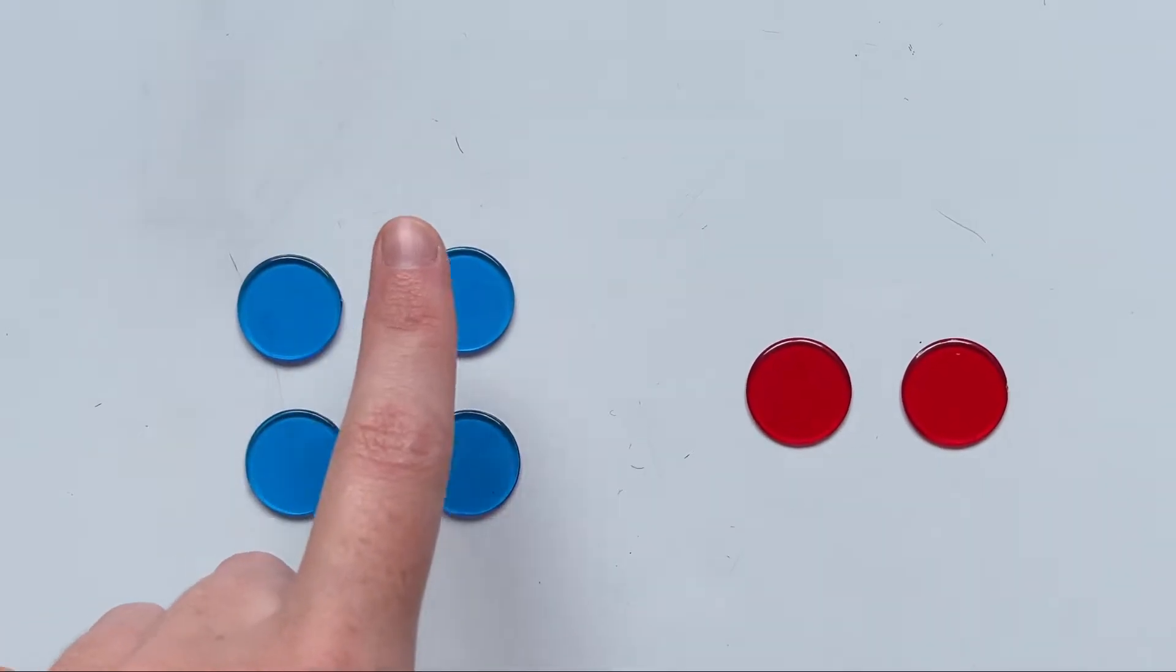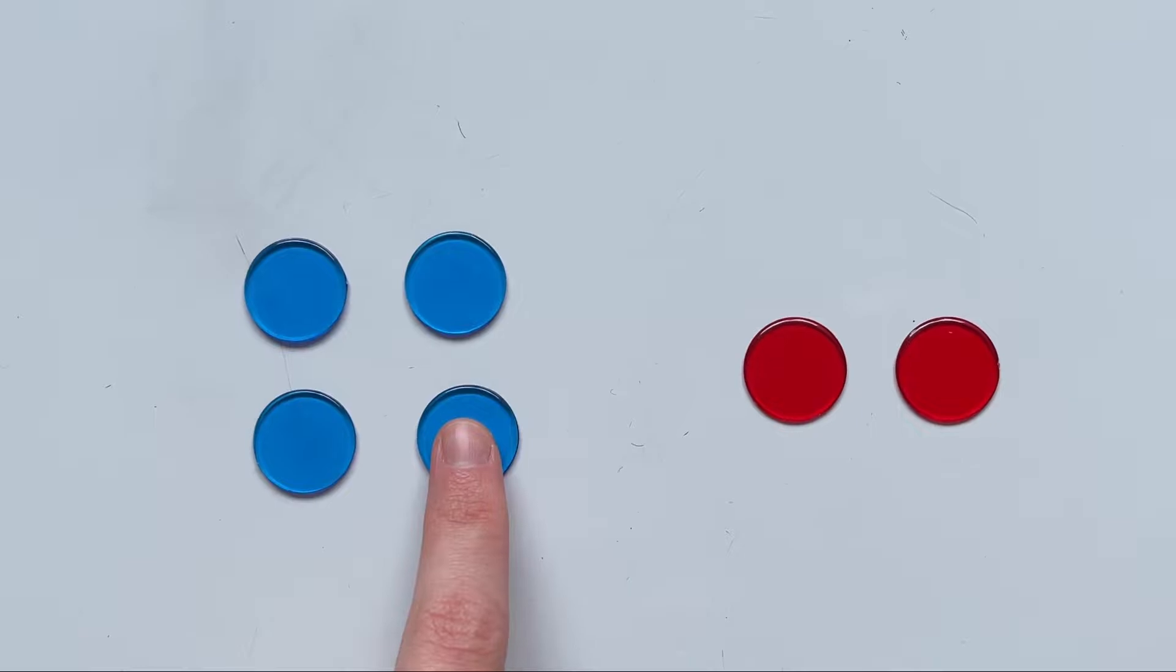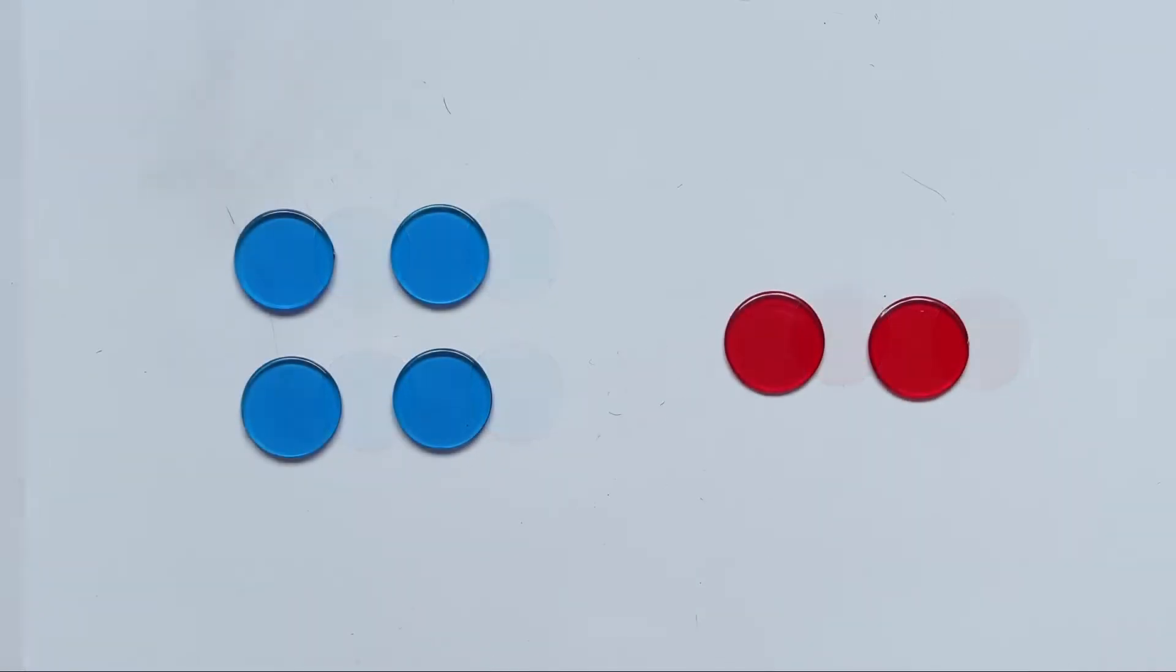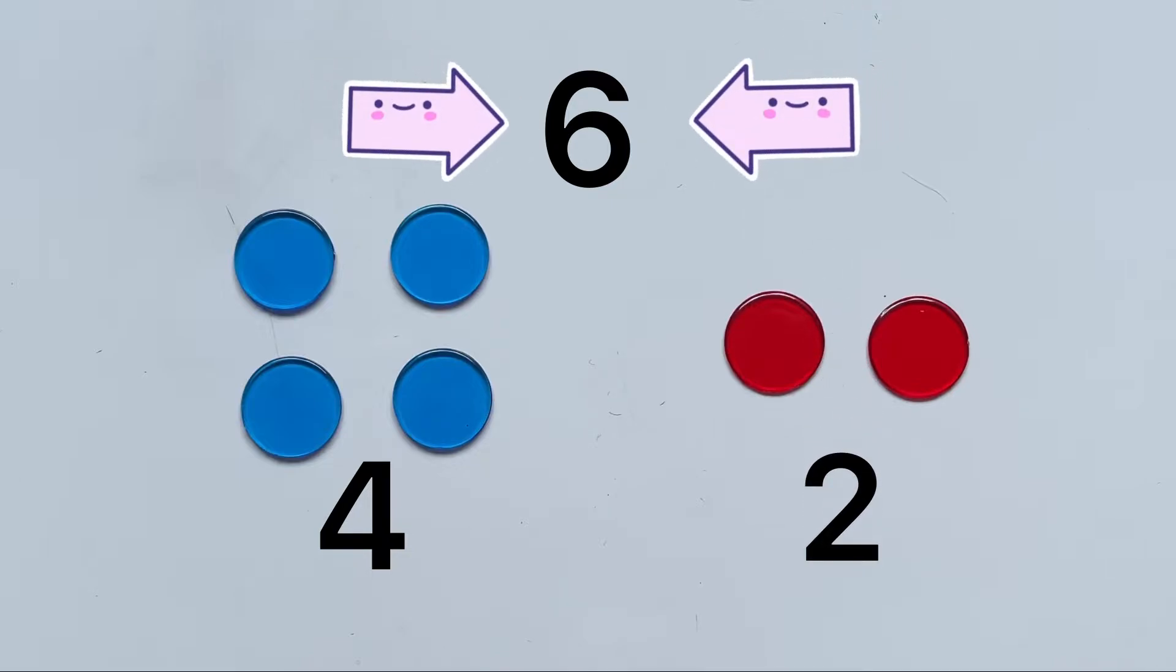One, two, three, four, five, six. So all together I have six counters. That means that four blue counters and two red counters make six counters in total.